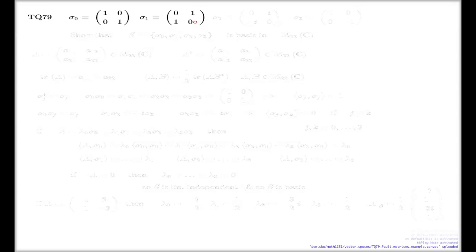The sigma one matrix is the matrix like this. Sigma two matrix—four matrices all together—is the matrix with the entries like this. And the sigma three matrix is the matrix with the entries like this.